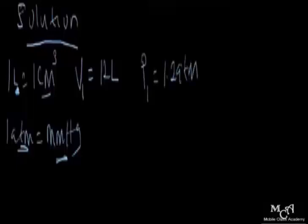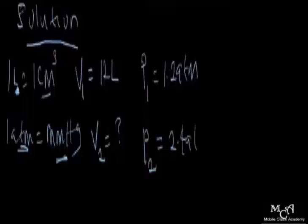Under a pressure of 1.2 atmosphere — remember one atmosphere is equivalent to millimeter mercury — so the first pressure P1 equals 1.2 atmosphere. What will the volume be? That is the second or final volume V2, which we don't know yet.